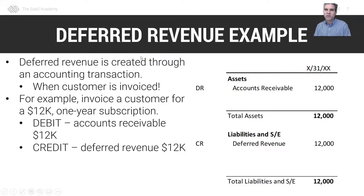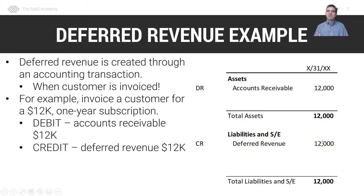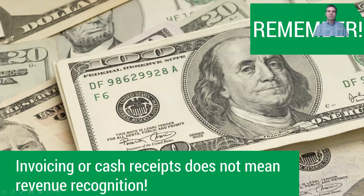For a quick deferred revenue example: let's say we invoice a customer for a one-year $12,000 subscription. We have not earned this revenue yet, so we debit accounts receivable for $12,000 and credit our liability section — deferred revenue — for $12,000. Notice there is no P&L interaction yet; we have not earned this revenue yet. We have to now perform a service and deliver a good to recognize this revenue. In SaaS, we commonly recognize revenue over time. Remember, invoicing or cash receipts does not mean revenue recognition.